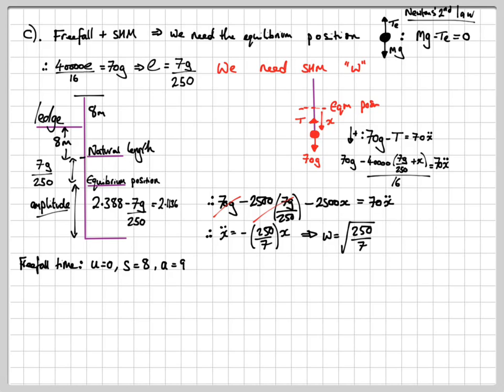So, we have the free-fall time, which is just a Suvat equation. Putting in the correct values will give you this 4 divided by the root of 9.8. If I was going to leave it as a third, I'd tidy that up, but at the end of the day, I actually want the decimal answer.